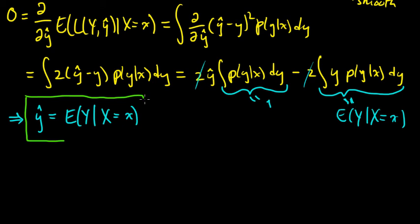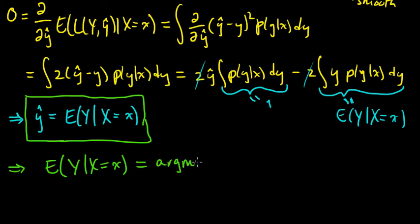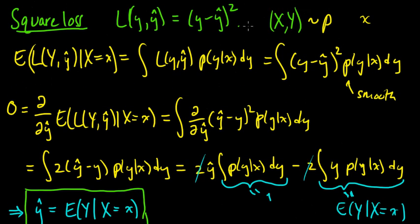So this is our solution. That implies that E(Y|X=x), the expected value of y given x equals little x, is the solution to this minimization problem, minimizing the expected loss given x equals little x. So that's a beautiful little result. In the case of square loss, minimizing this conditional expected loss turns into just solving this conditional expectation.